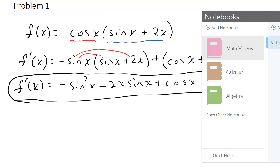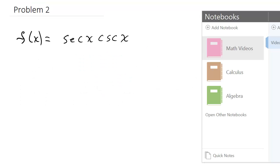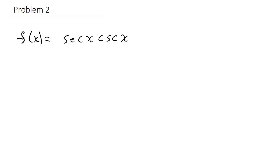Now we've got f(x) equals secant x times cosecant x. Here's our first function — secant x — and here's our second function — cosecant x.